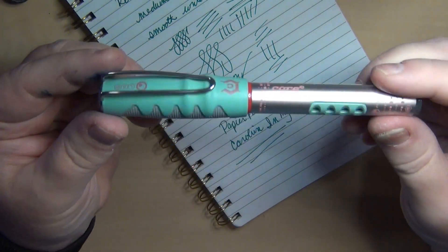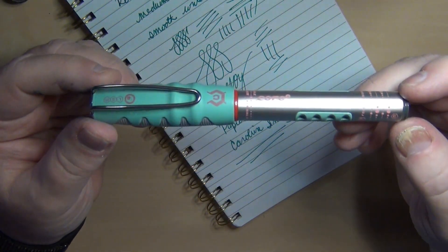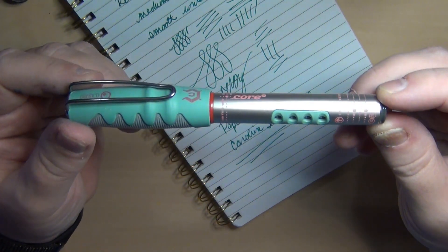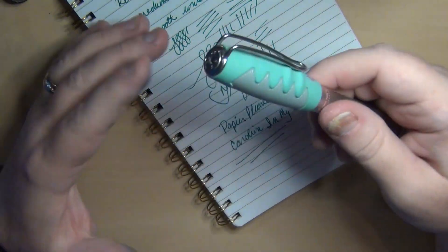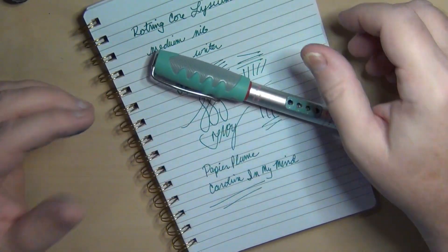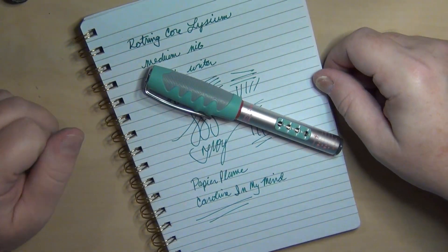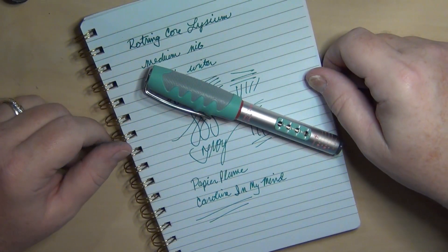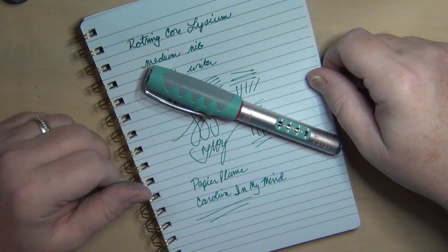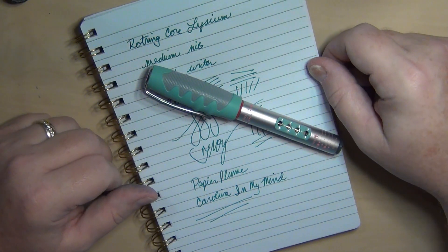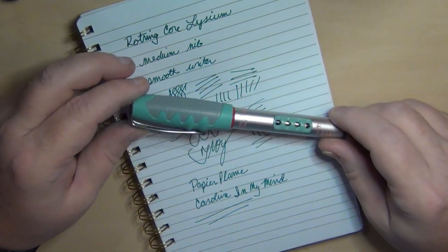So something very different, very weird, and maybe just a little bit of novelty to have. But it writes fairly well and I've been using it. So the Core Rotring Elysium. And I've seen them out there on eBay. So if it's something that kind of appeals to you, maybe you can find one of these to add to your collection.